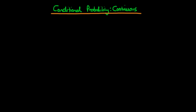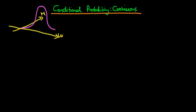In this video, I want to talk about the concept of conditional probability when we're talking about continuous random variables. The example I'm going to speak about here involves a probability density defined across the height and weight of individuals. The PDF might look something like a cone shape, represented in three dimensions, and we're interested in finding the probability that height is less than or equal to 1.5 meters given that weight is less than or equal to 50 kilograms.